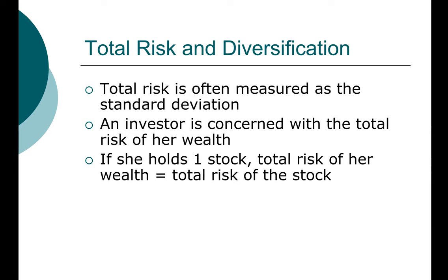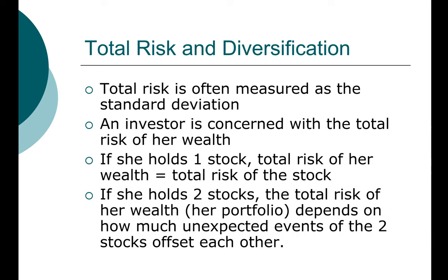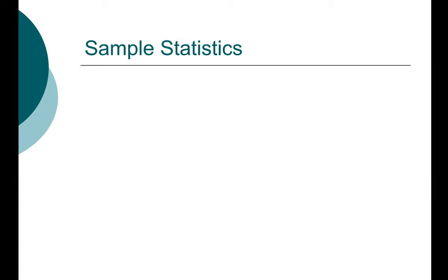However, if the investor holds more than one stock, we call that a portfolio. A portfolio is simply a collection of more than one asset — it can be one stock, one bond, or two stocks. Anytime we put our money into more than one single investment, we have a portfolio. When that happens, the risk of that portfolio depends on how the unexpected events of one stock may or may not offset the unexpected events of the other stock. We're going to go through some examples to demonstrate that, using some numerical examples and sample statistics.